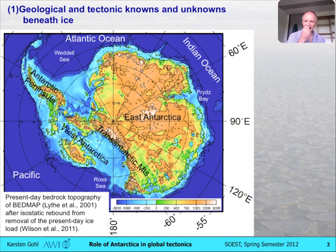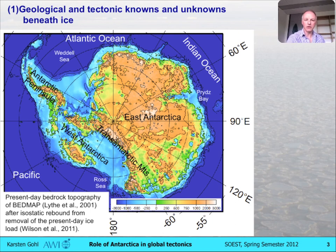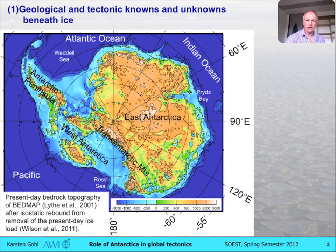Let's remove the about three to four kilometer thick ice sheet of Antarctica. What you see here is the present-day bedrock topography. It's an image made more than ten years ago and there's an updated version in the works at the moment. But still it's quite a decent overview of the different morphological units, and that can tell us a little bit about what lies underneath. Obviously, as you probably all know, the major division of Antarctica is East and West, separated by the Trans-Antarctic Mountains. For the beginning of the story, we will stay mostly in East Antarctica.